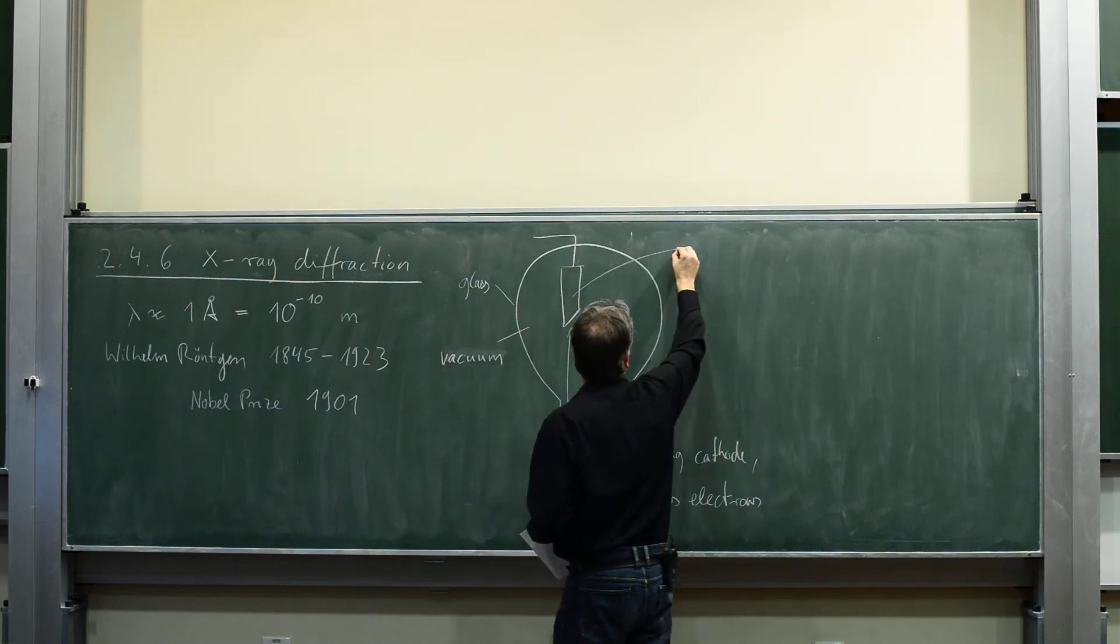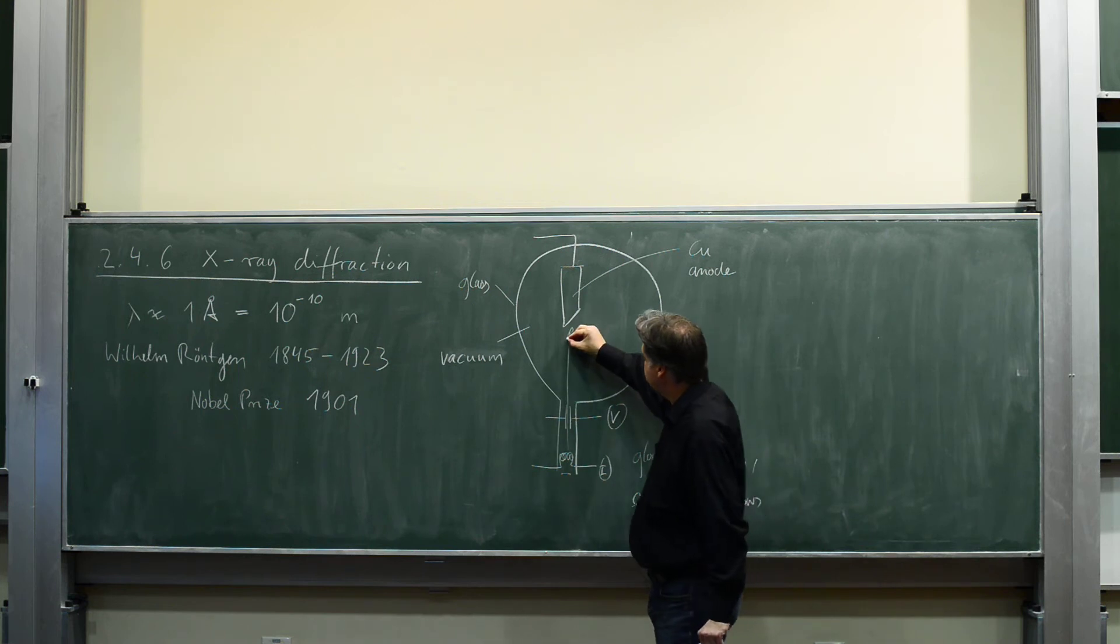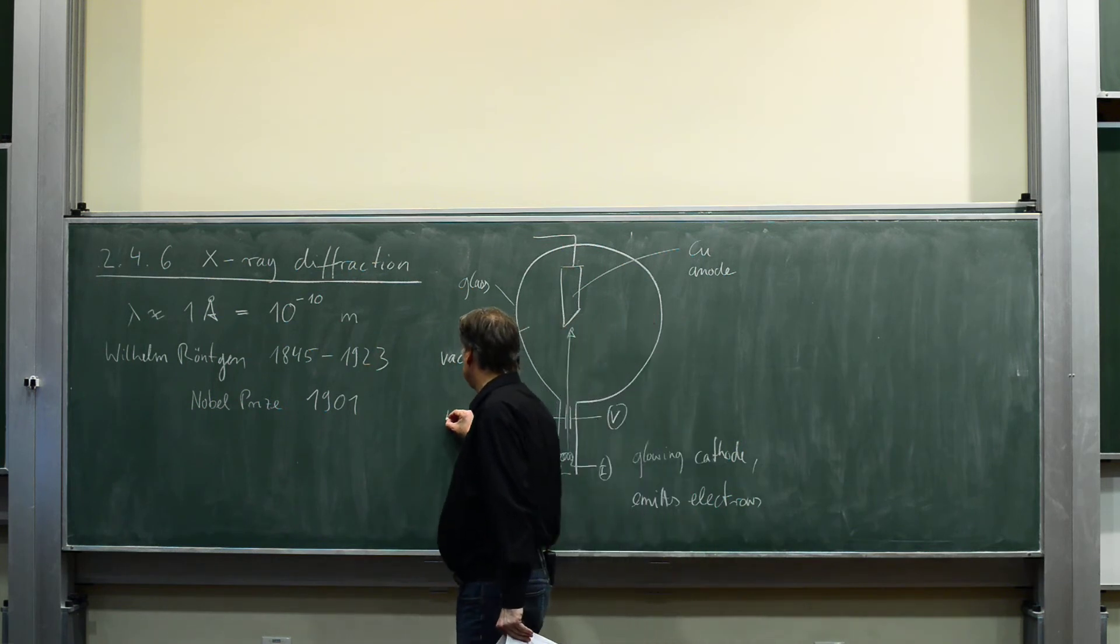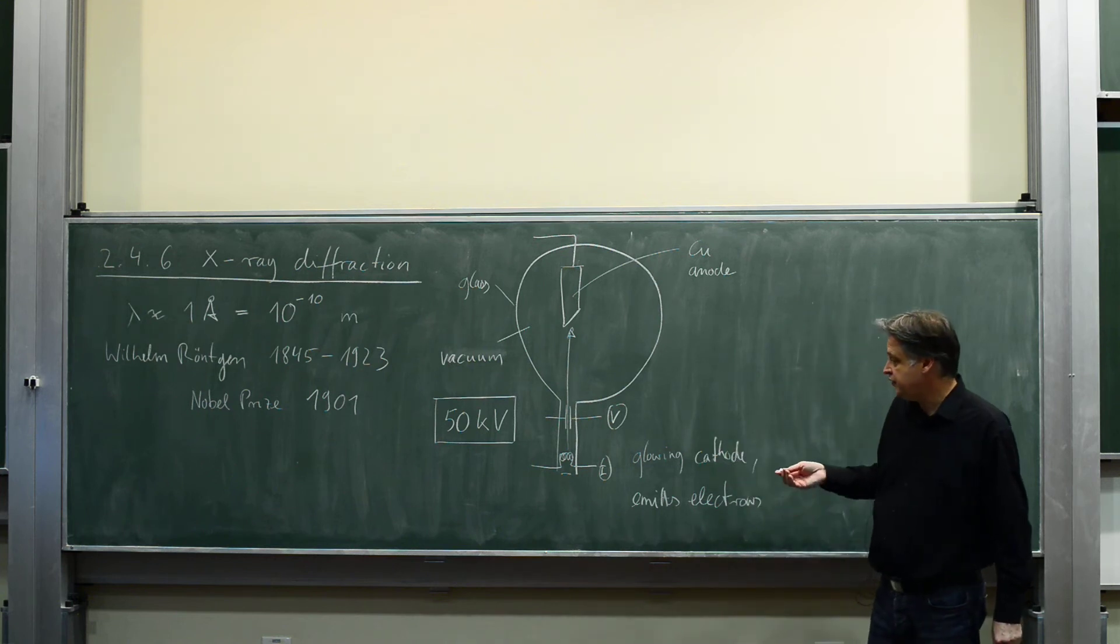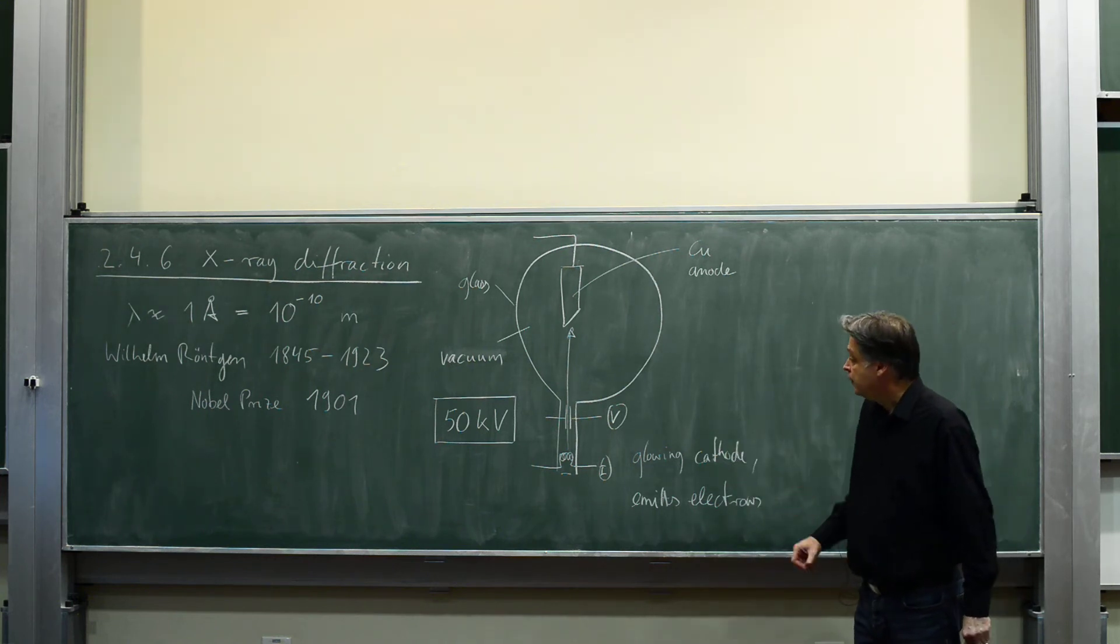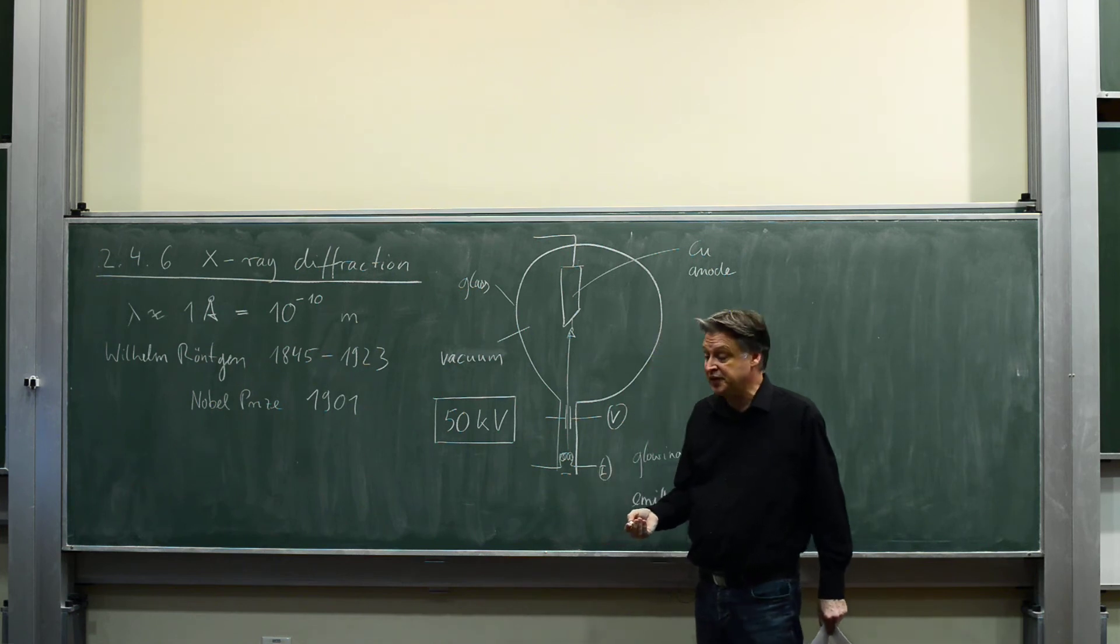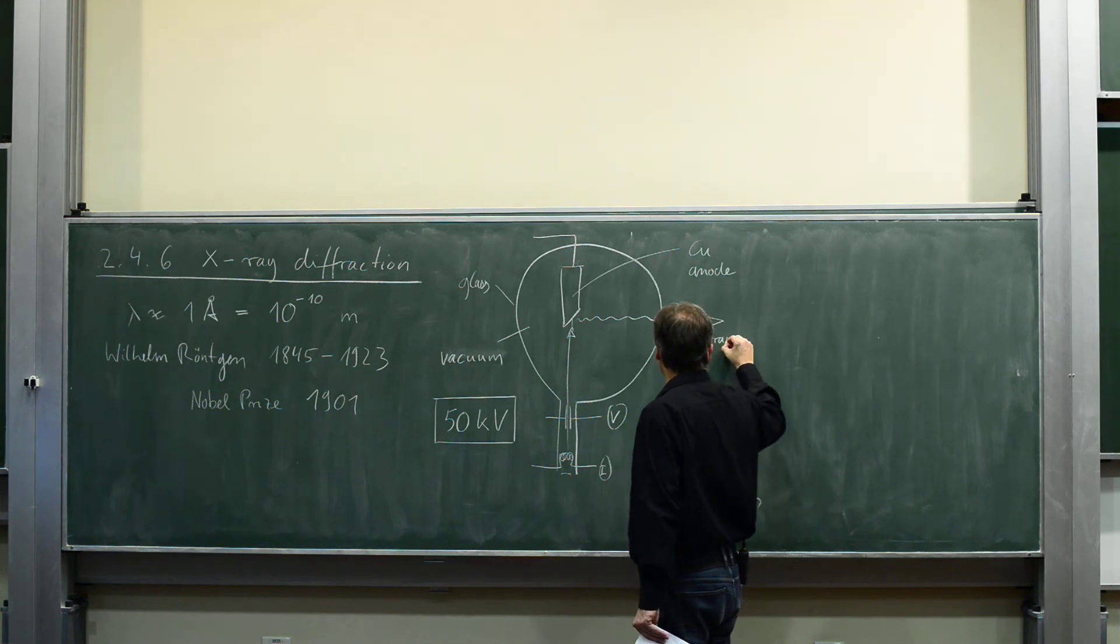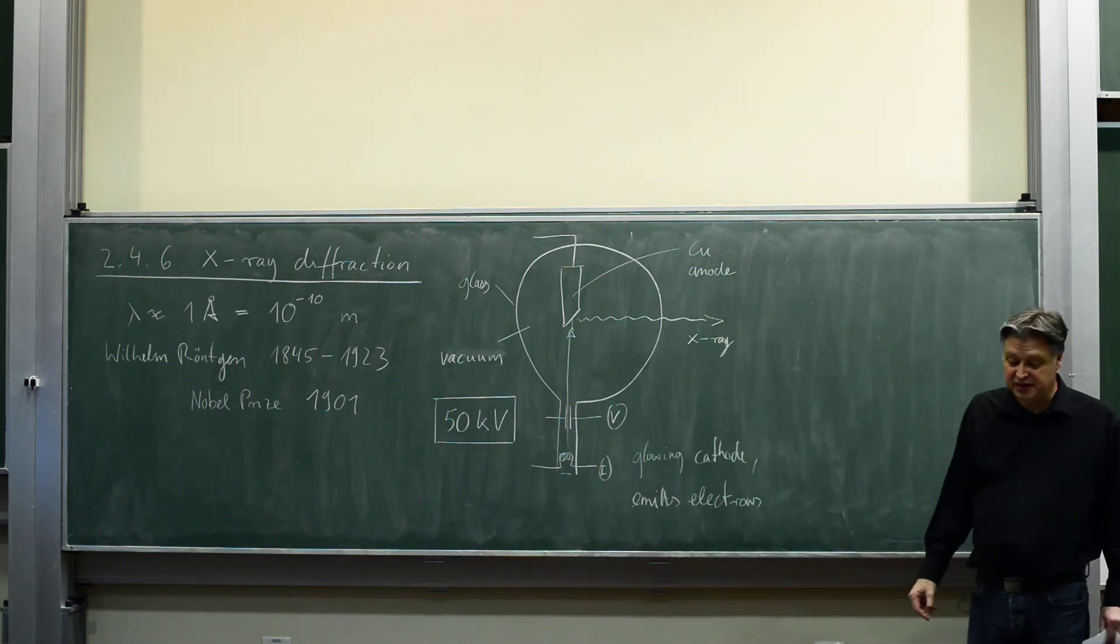Let's say copper. The electrons are typically accelerated with a kinetic energy of 50,000 volt. That's the typical number used in hospitals or here in house for X-ray diffraction. The electrons hit the surface and are decelerated in a very short moment. At that moment, they release X-ray radiation in forward direction. This is how X-ray is produced.